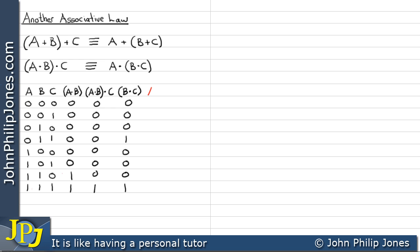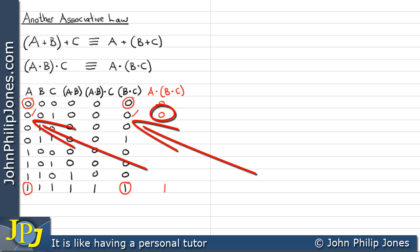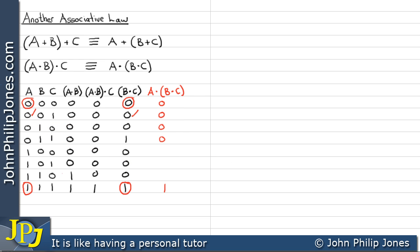For the last column, we AND the A column with the B AND C column just produced. Looking at each entry, zero AND zero is zero. The only case where both A and B AND C are one is the last row, giving a one there. All other combinations produce a zero.